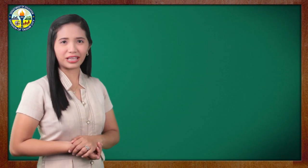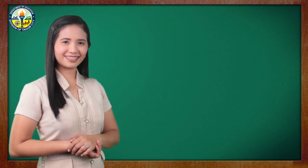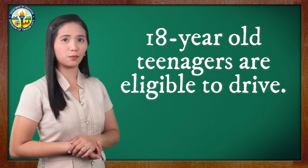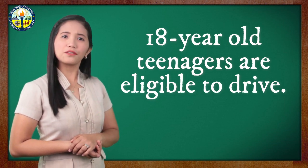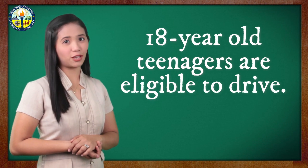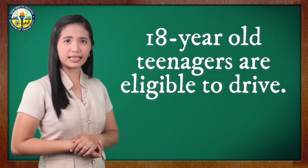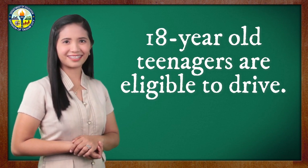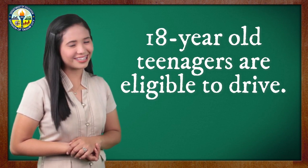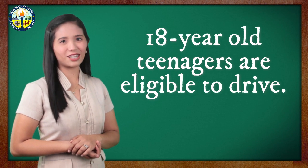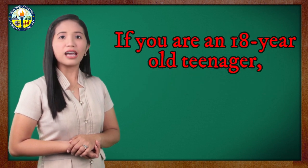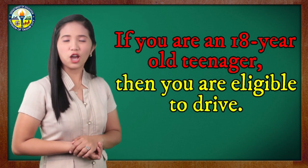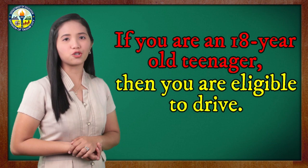What about this statement? '18-year-old teenagers are eligible to drive.' The statement is not in the if-then form. Its corresponding if-then statement is: If you are an 18-year-old teenager, then you are eligible to drive.